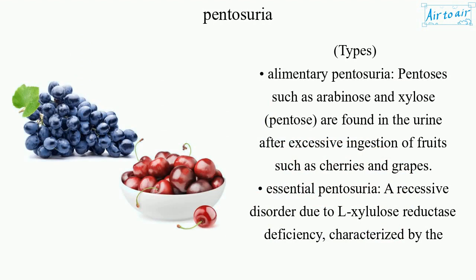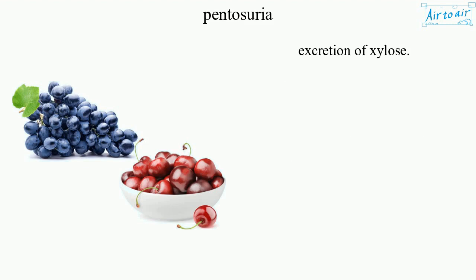Types. Alimentary pentosuria: pentoses such as arabinose and xylose are found in the urine after excessive ingestion of fruits such as cherries and grapes. Essential pentosuria: a recessive disorder due to L-Xylulose reductase deficiency, characterized by the excretion of xylose.